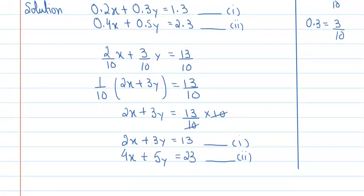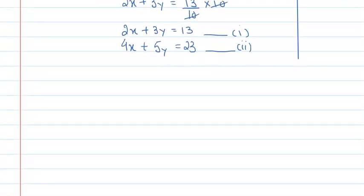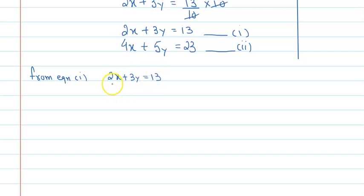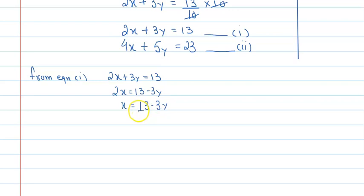जैसे आप इसमें आगे जाएंगे, तो आपको substitution method apply करना है। तो substitution method के लिए आप क्या करें? From equation 1, x की value आप यहाँ से निकाल लीजिए। आपके पास equation है 2x plus 3y equal to 30. Left hand side पे x को बिल्कुल अकेला छोड़ना होगा। तो आप इसको लिख सकते हैं: 2x equal to 13 minus 3y, because plus 3y जब right hand side पे transpose हुआ तो sign change। And x equal to 13 minus 3y upon 2. इसको भी आप mark कर दीजिए — equation number 3.